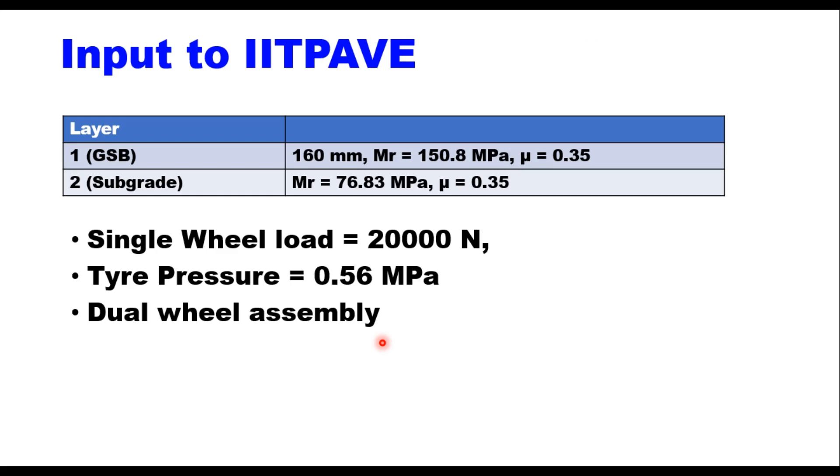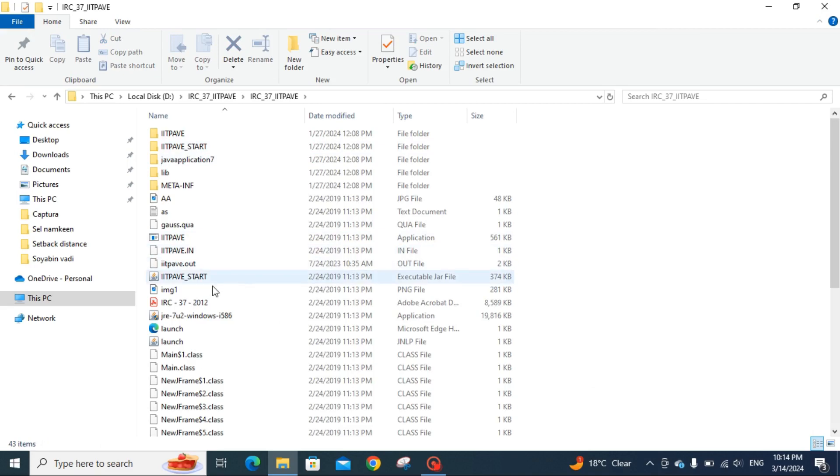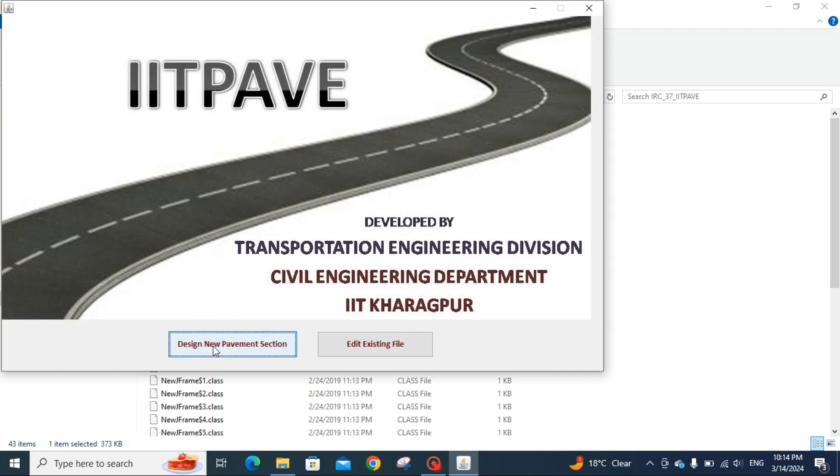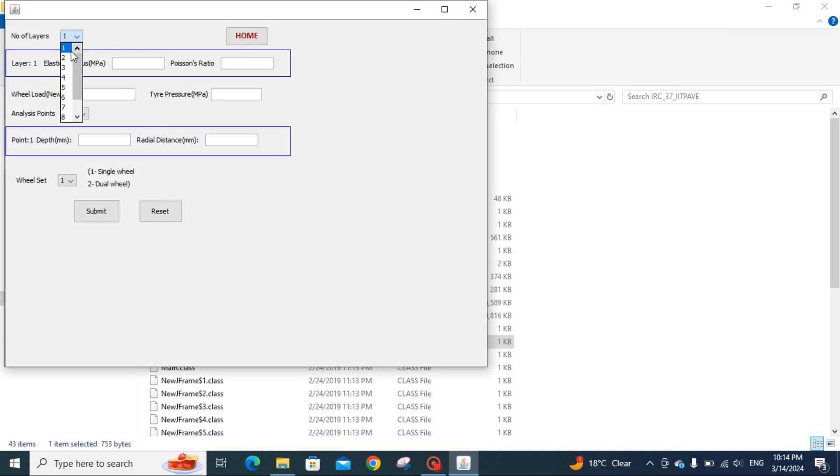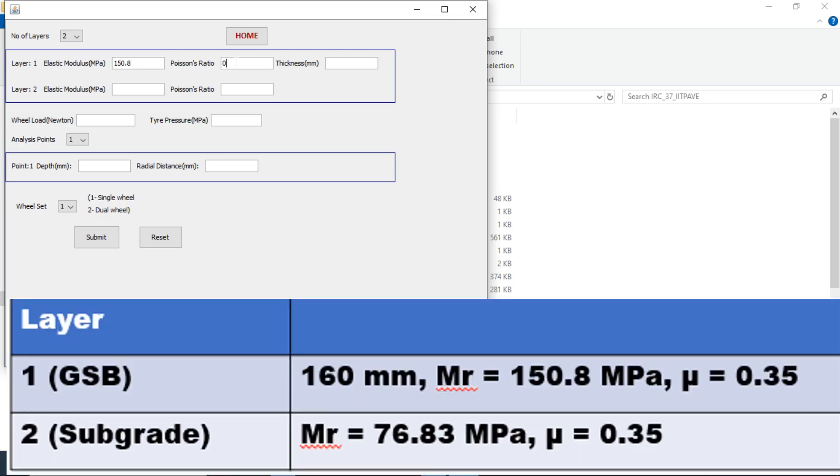So here is IITPAVE software. Double click it, and then you start this IITPAVE. This screen will appear: design a new pavement, number of layers are two, and you feed these values here. Elastic modulus of the first layer, that is 150.8, thickness, Poisson's ratio is 0.35, thickness is 160 millimeter. Next layer is your subgrade, elastic modulus is 76.83.